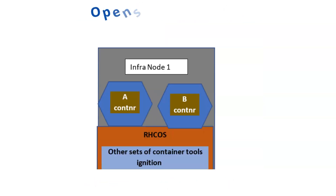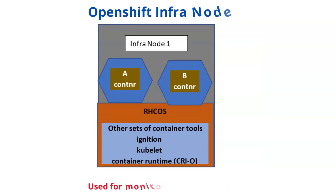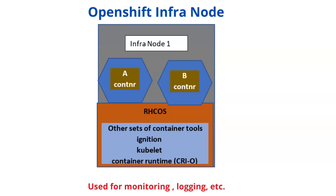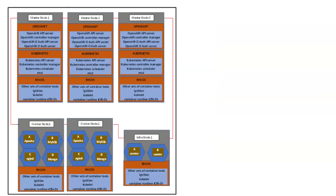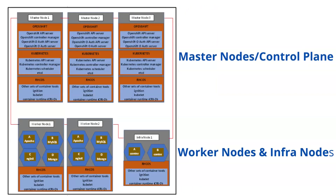The infra node, meaning infrastructure node, is used to host infrastructure services such as monitoring, logging, and so on. In an OpenShift cluster there must be a minimum of at least three control planes and a minimum of two worker nodes.